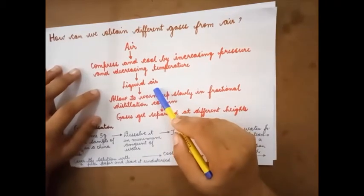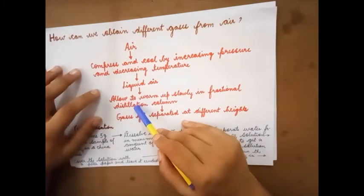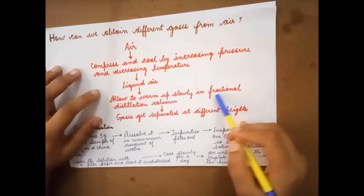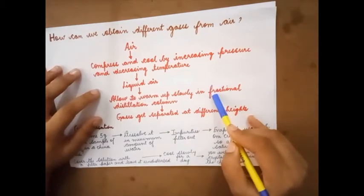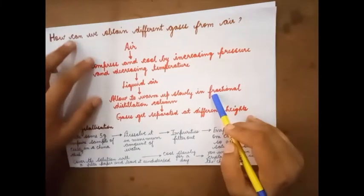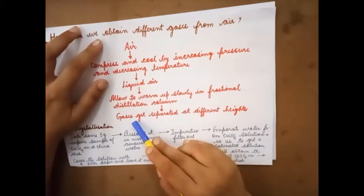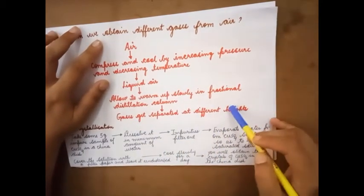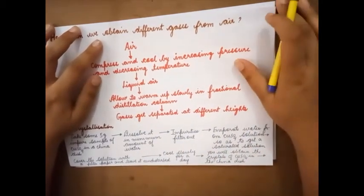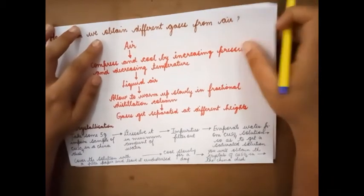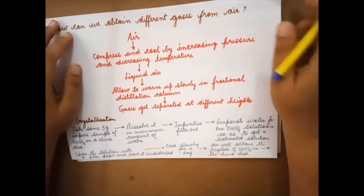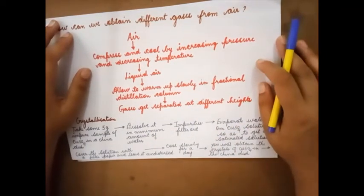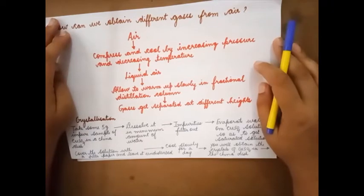Once it has got converted to liquid then allow it to warm up slowly in fractional distillation column. This liquid air is taken in the fractional distillation column and slowly it is getting heated up. Gases get separated at different heights based on their boiling point.